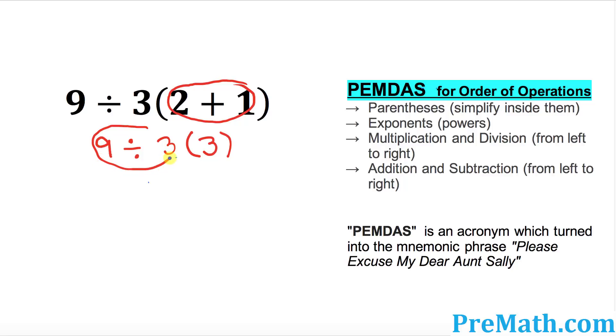So I'm going to circle that one and take care of that thing. 9 divided by 3 is 3 and then I want to put down 3 right here and 3 times 3 is what? 9. And 9 is your correct answer.